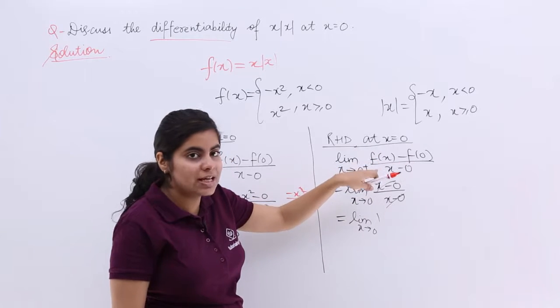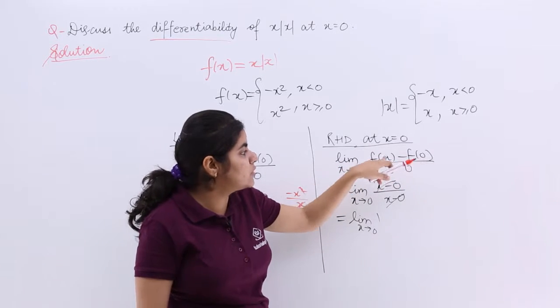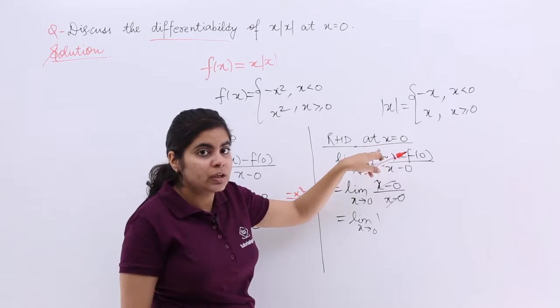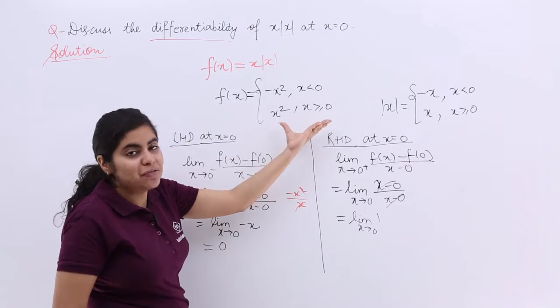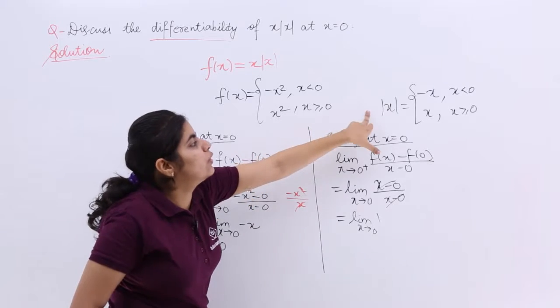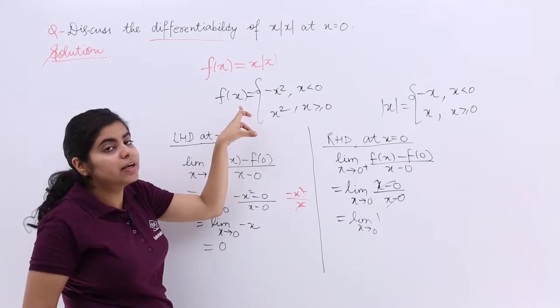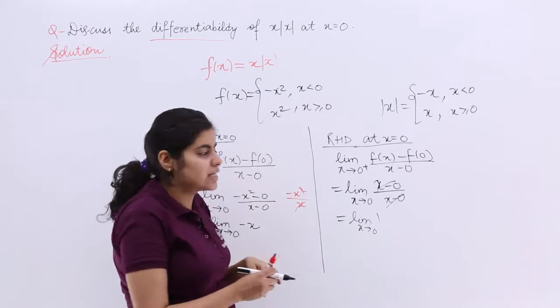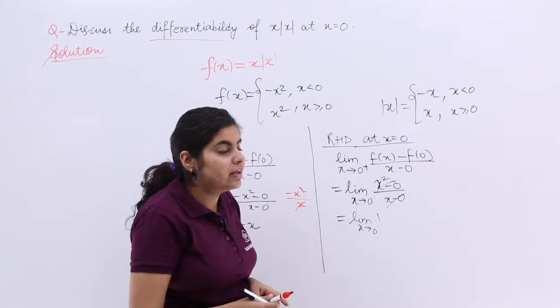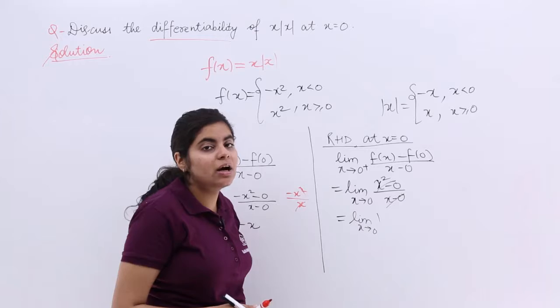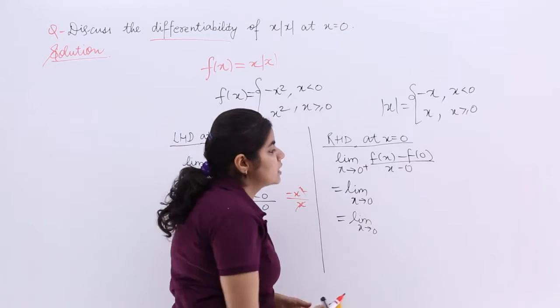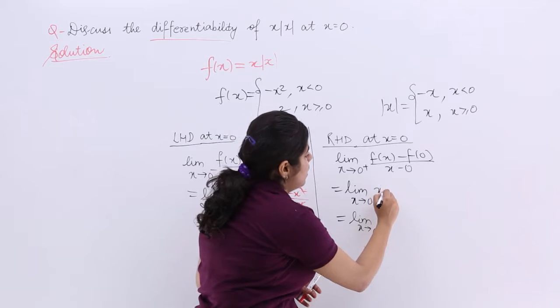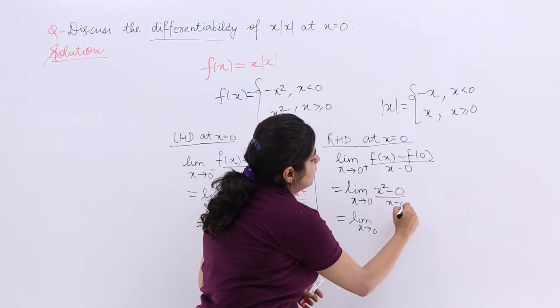f(x) minus f of 0. What is f(x)? What is f(x) when x is greater than 0? You have to see this function. f(x) when x is greater than 0 because you are not seeing only mod x but x mod x. f(x). So f(x) is x square. I am so sorry. Let's write it again. x square is here minus 0 upon x minus 0. Let's write it again. It is x square minus 0 upon x minus 0.